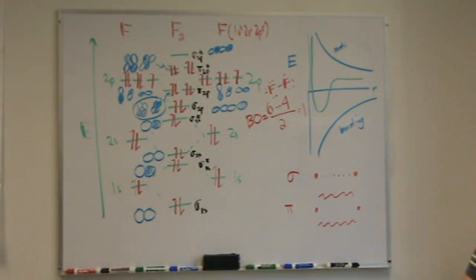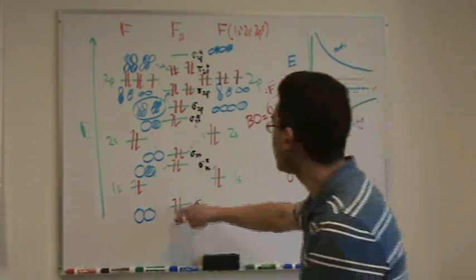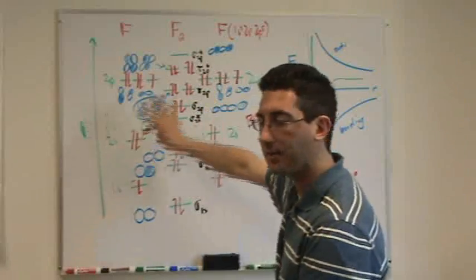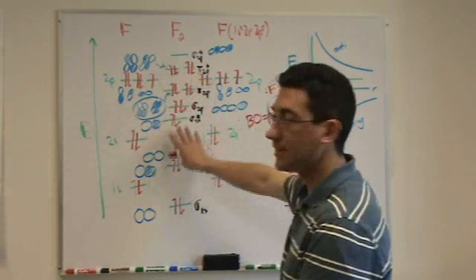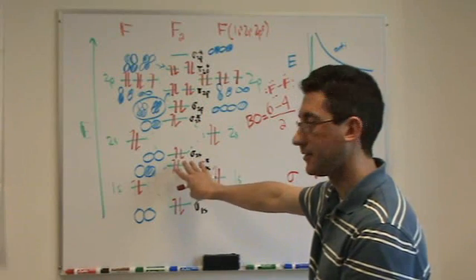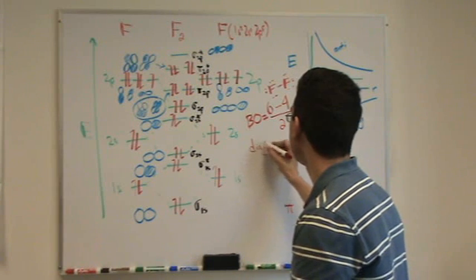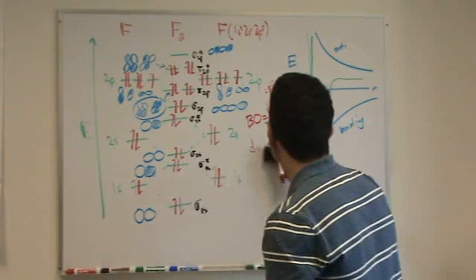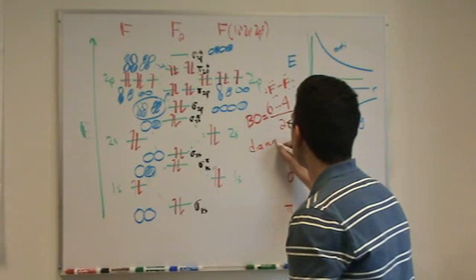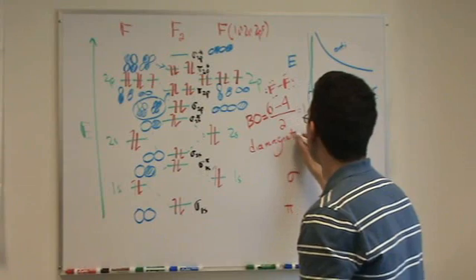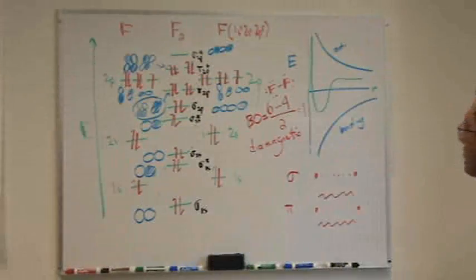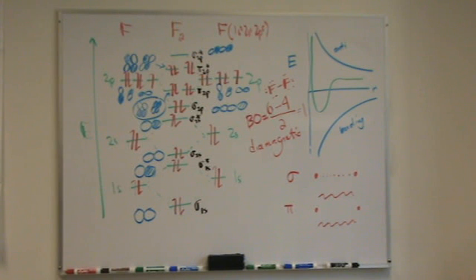The other thing we'll ask is, is it paramagnetic or diamagnetic? Para means there's at least one unpaired electron. Diamagnetic means that there's none. And you only look at the center, pay no attention to the outsides, only look at the molecular orbital. And you're going to see everything in this example is paired. So, we call this diamagnetic.